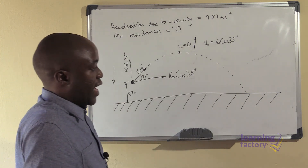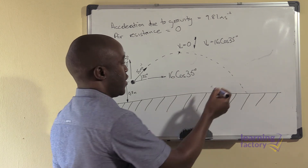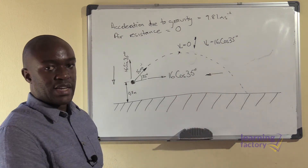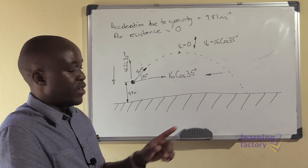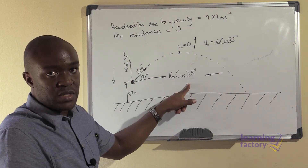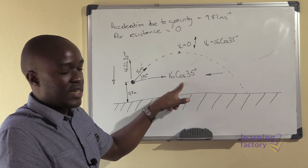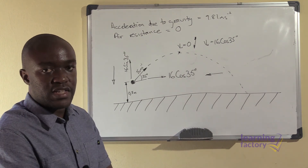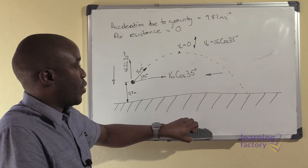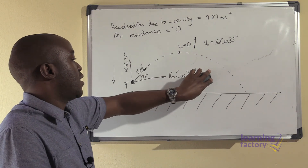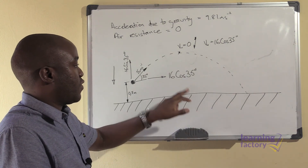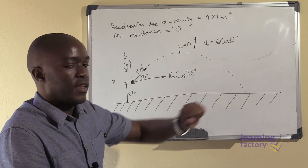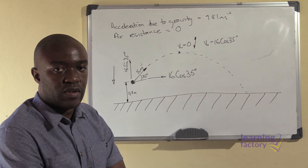If we had wind coming from that direction, it would cause an acceleration which would then reduce our velocity in the horizontal direction. In this case, because there is no wind, we have no effect on the horizontal velocity. Therefore, that horizontal velocity is going to be constant until the projectile hits the ground.